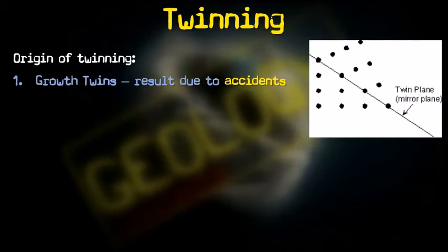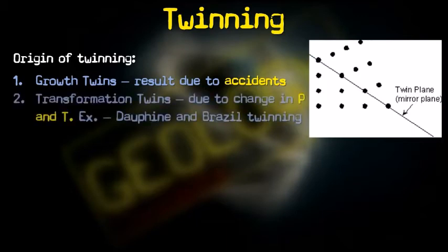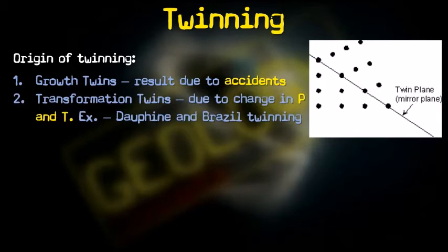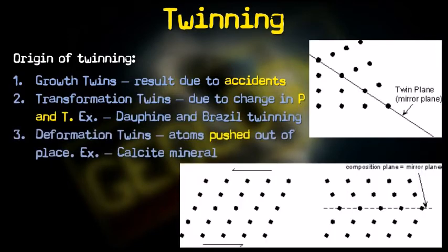Next is transformation twinning, due to changes in pressure and temperature conditions. In quartz, the Dauphiné and Brazil twinning are examples of transformation twins. Third is deformation twinning, in which atoms are pushed out of place. If this produces a symmetrical arrangement, it results in deformation twins. The mineral calcite can easily be twinned in this way, producing a polysynthetic twin.